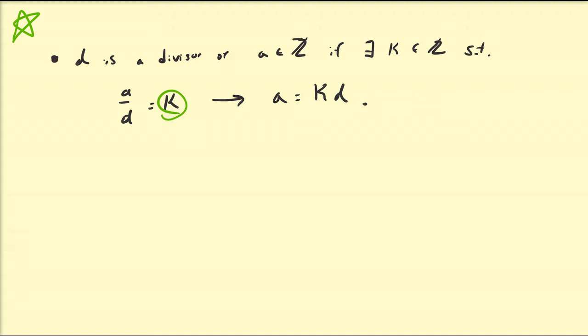Another way of writing this is saying that a, the number that we're dividing d into, can be represented by the product of the divisor and another integer. We're going to look at a few theorems associated with this that are going to be a little bit more important later.